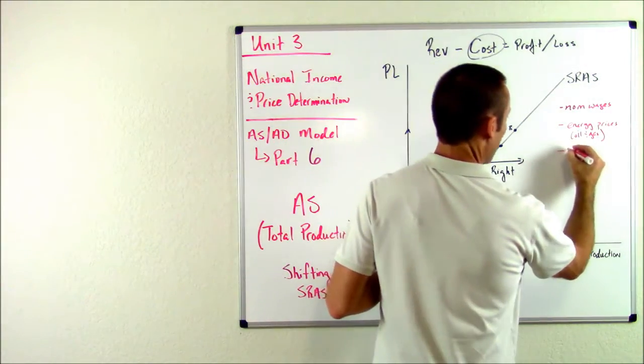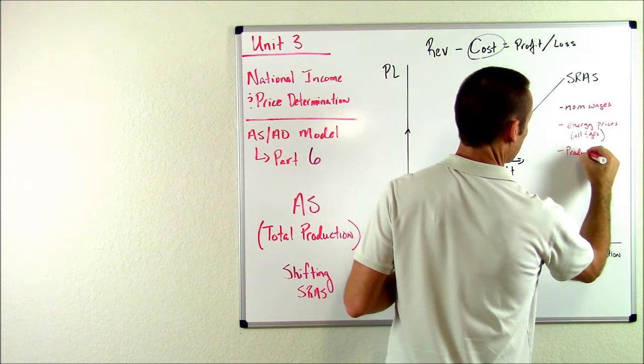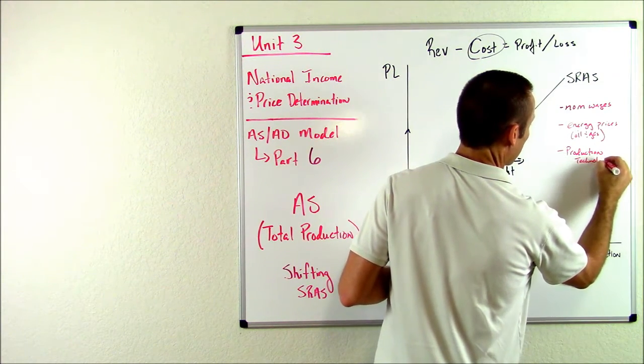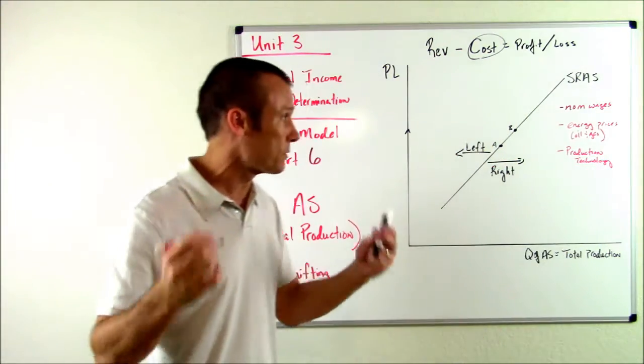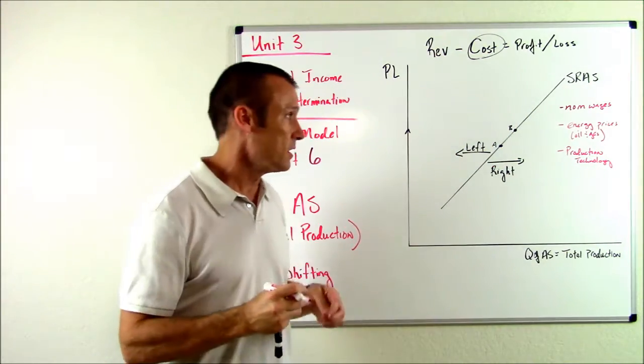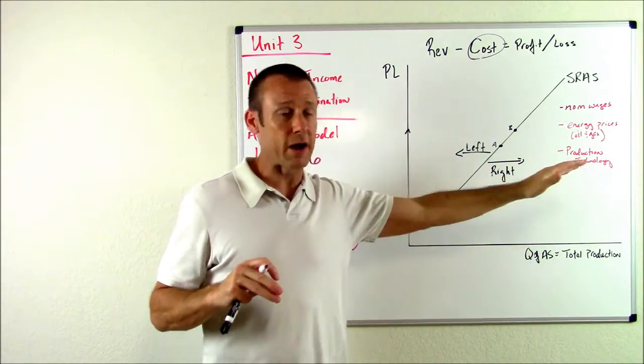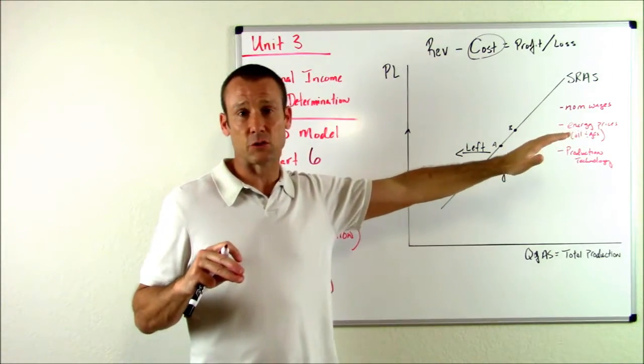Number three. Production technology. Production technology. For the most part, technology only improves. For the most part, production technology only improves. So for the most part, changes in production technology are going to be causing SRAS to go right because production technology only improves.